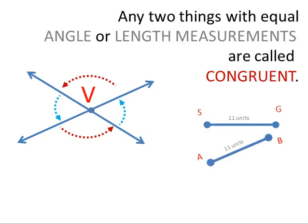Any two things with equal angle or length measurements are called congruent.